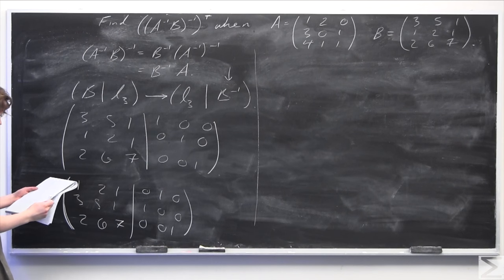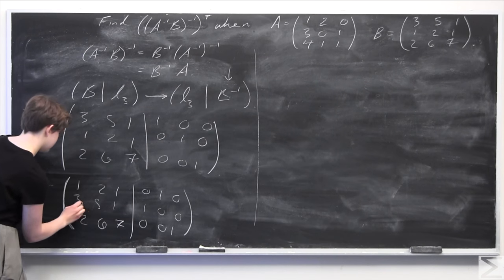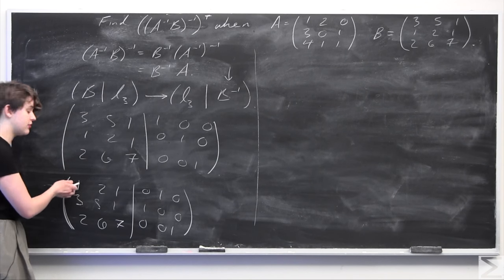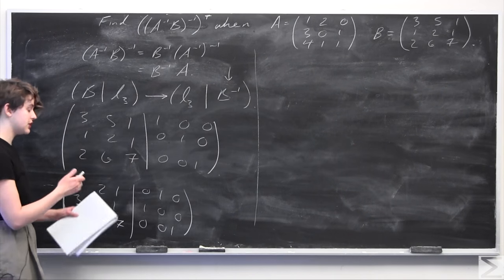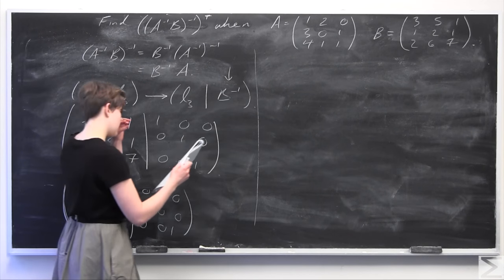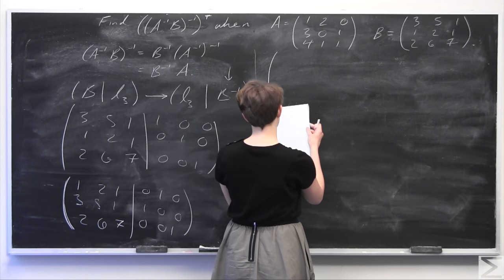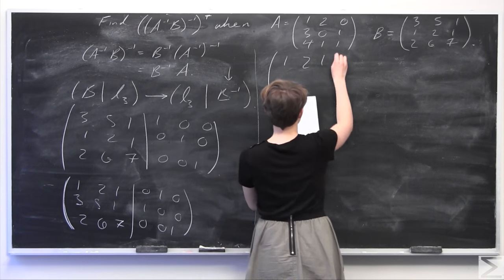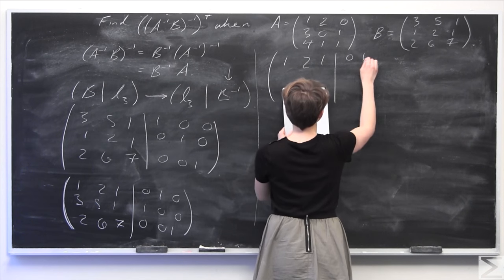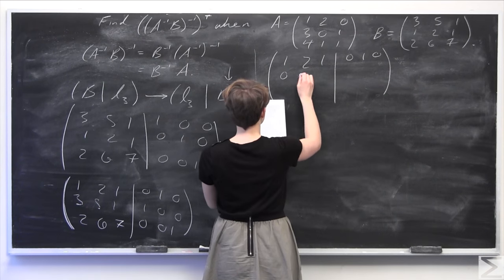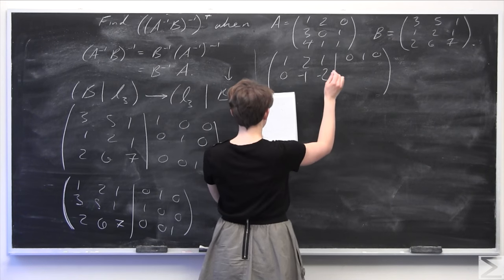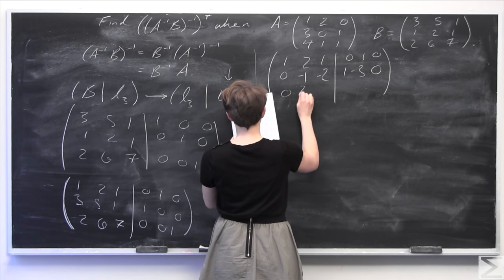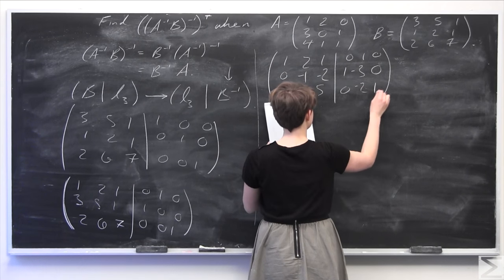Our best bet is to subtract three times the first row from the second row, and two times the first row from the third row, to eliminate the 3 and 2 in the first column. The top row stays constant: 1, 2, 1 | 0, 1, 0. The second row becomes 0, -1, -2 | 1, -3, 0. The third row becomes 0, 2, 5 | 0, -2, 1.